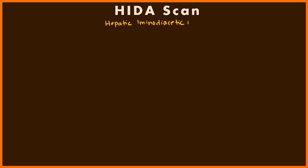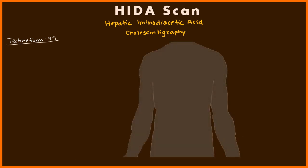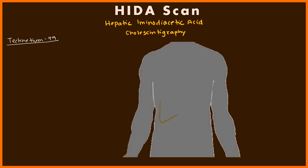After ultrasound, if results are equivocal or the clinical picture suggests cholecystitis but ultrasound is normal, a follow-up test is the HIDA scan — hepatobiliary iminodiacetic acid scan, also called cholescintigraphy. This scan uses the radiotracer technetium-99. The dye is injected intravenously, travels through the venous and arterial systems, and is taken up by the liver's hepatocytes. The gallbladder drains into the duodenum, and the scan tracks this process.